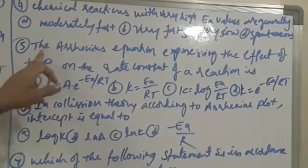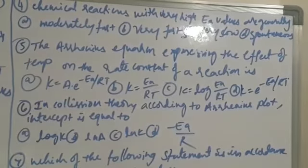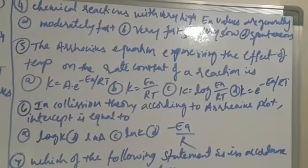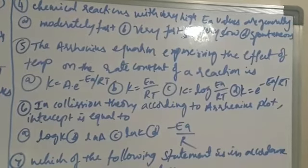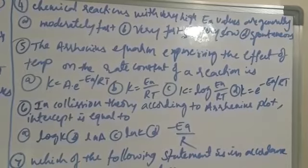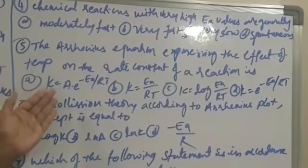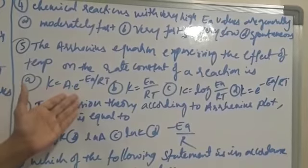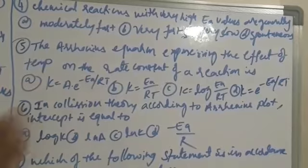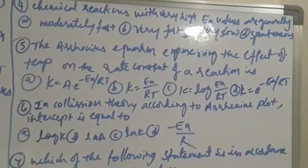Next, the Arrhenius equation expressing the effect of temperature on the rate constant of a reaction is K is equal to A into e to the power minus Ea by RT. That is the first option.